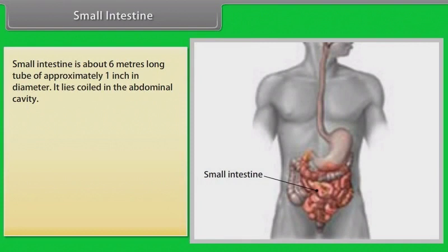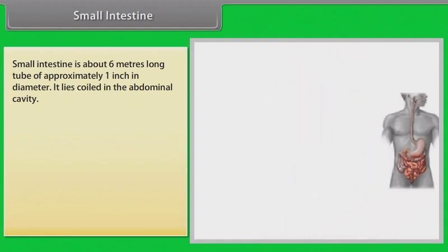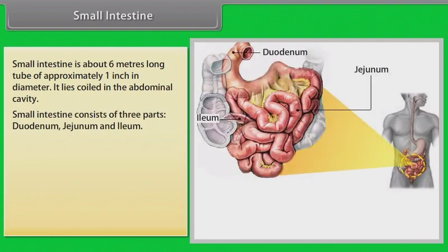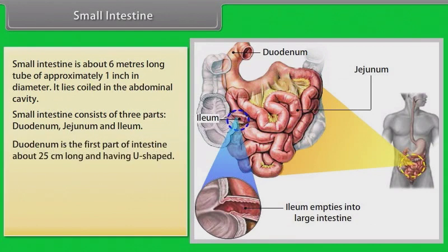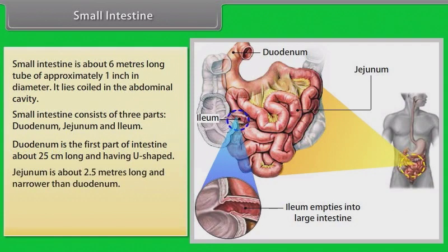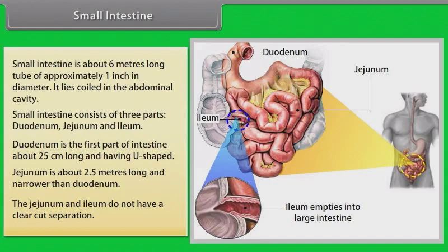The small intestine is about 6 meters long and approximately 1 inch in diameter, lying coiled in the abdominal cavity. It consists of three parts: the duodenum, jejunum, and ileum. The duodenum is the first part, about 25 centimeters long and U-shaped. The jejunum is about 2.5 meters long and narrower than the duodenum. The jejunum and ileum do not have a clear-cut separation.